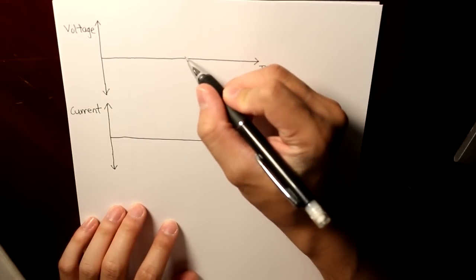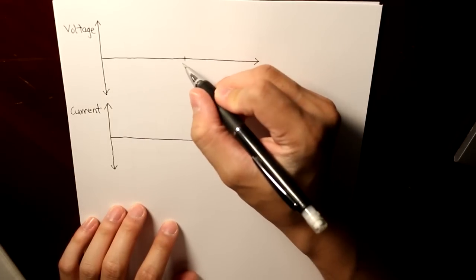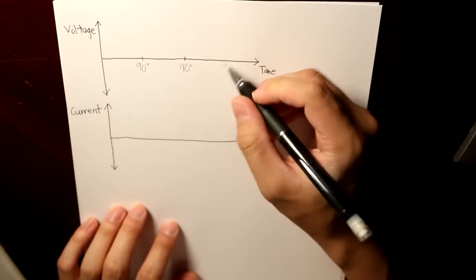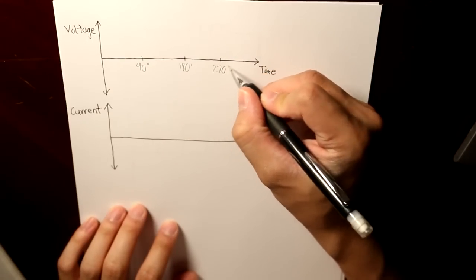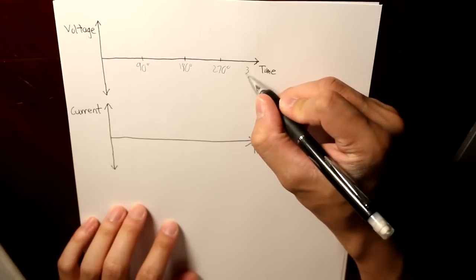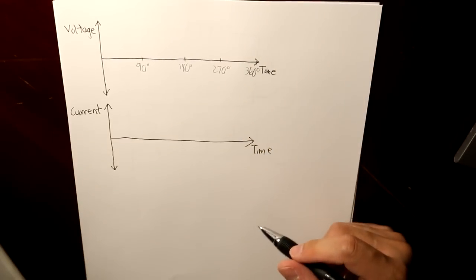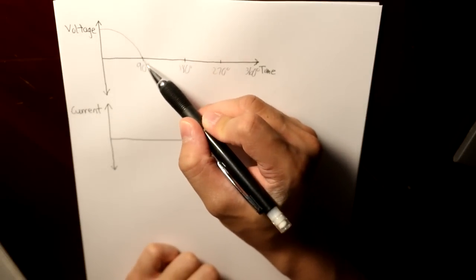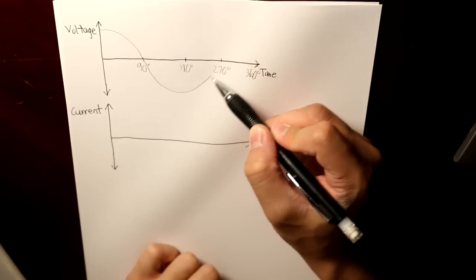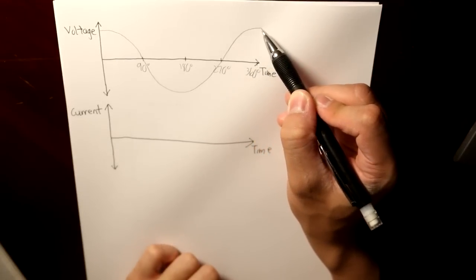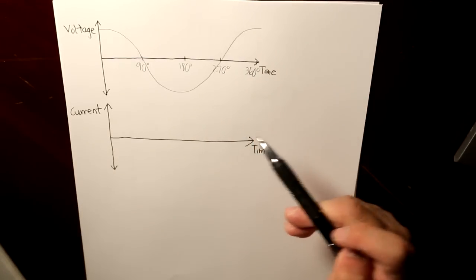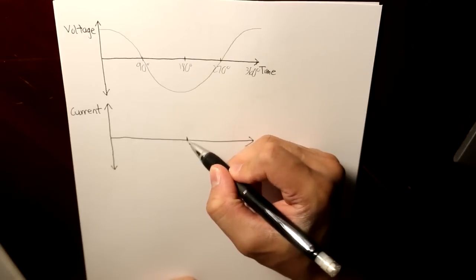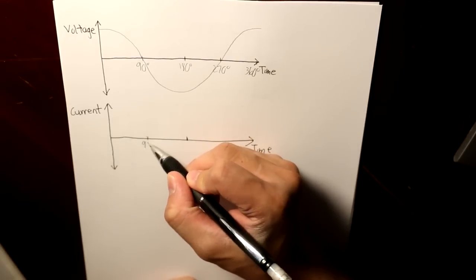And we're going to label here in the middle as 180 degrees. Here, 90 degrees. Right here, 270 degrees. And all the way to the end here, 360 degrees. And I'm just going to draw the voltage waveform. This is how it's going to look like.